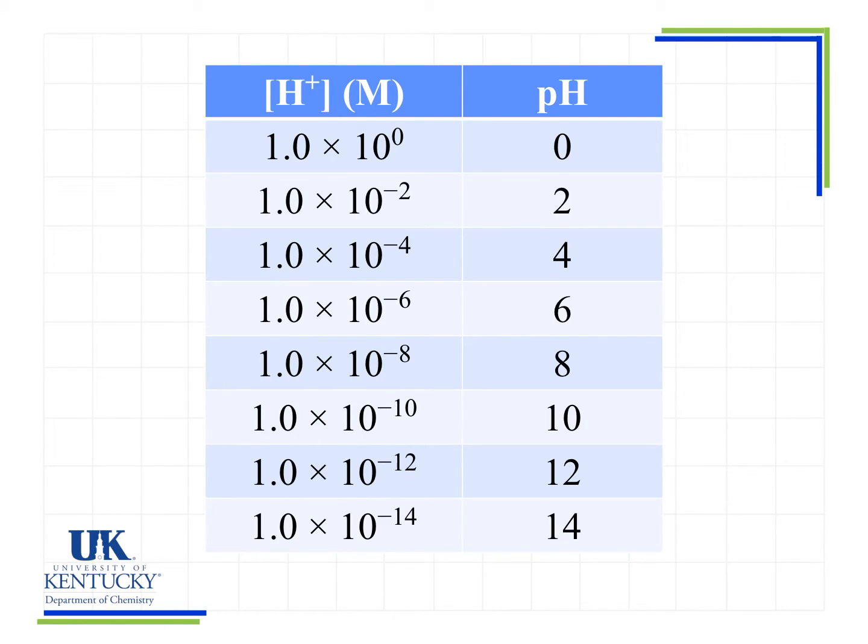We're going to look at how we actually calculate pH values and how we use our calculator to do that. But this chart shows you a rough guideline to assess whether your pH value is an appropriate or reasonable answer. Notice if we have 1.0 times 10 to the 0, our pH is 0. We have 1.0 times 10 to the minus 2, our pH is 2. Minus 4, 4. Minus 6, 6. Minus 8, 8, and so on. If the value is not 1 times 10 to the minus 6, it's not going to be exactly 6, but we know it's going to be somewhere in that range.